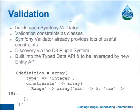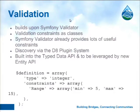The typed data API also includes validation. It makes use of the Symfony validator and integrates it with typed data via so-called constraints. Symfony validator has constraint classes which contain the validation logic. For example, if you want to validate an integer you can use the range constraint and specify the minimum and maximum value. There is already a set of predefined constraint classes in Symfony validator which we reuse and integrate into Drupal via the plugin system. We discover constraints via the plugin system, and you can add your own constraints with your own validation logic.